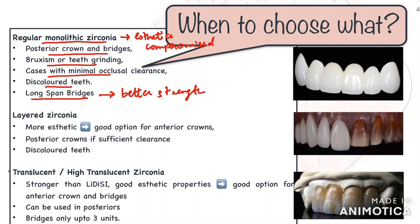For anteriors, you can go for veneered zirconia or high-translucent zirconia. Veneered restorations are the layered ones — since they have two layers, they require more reduction. But they have good aesthetics, so they can be given in both posteriors as well as anteriors, as long as you have sufficient clearance. They can also be used to mask discoloration as the inner zirconia coping can be opaque.